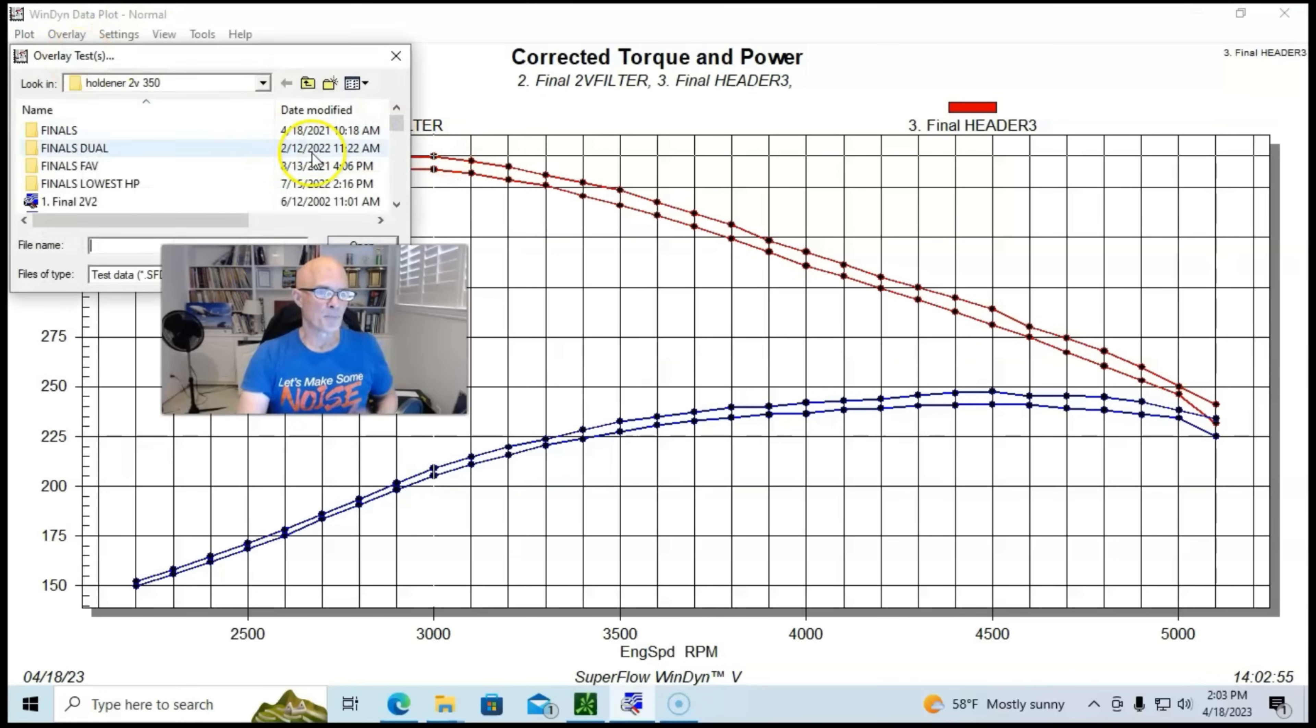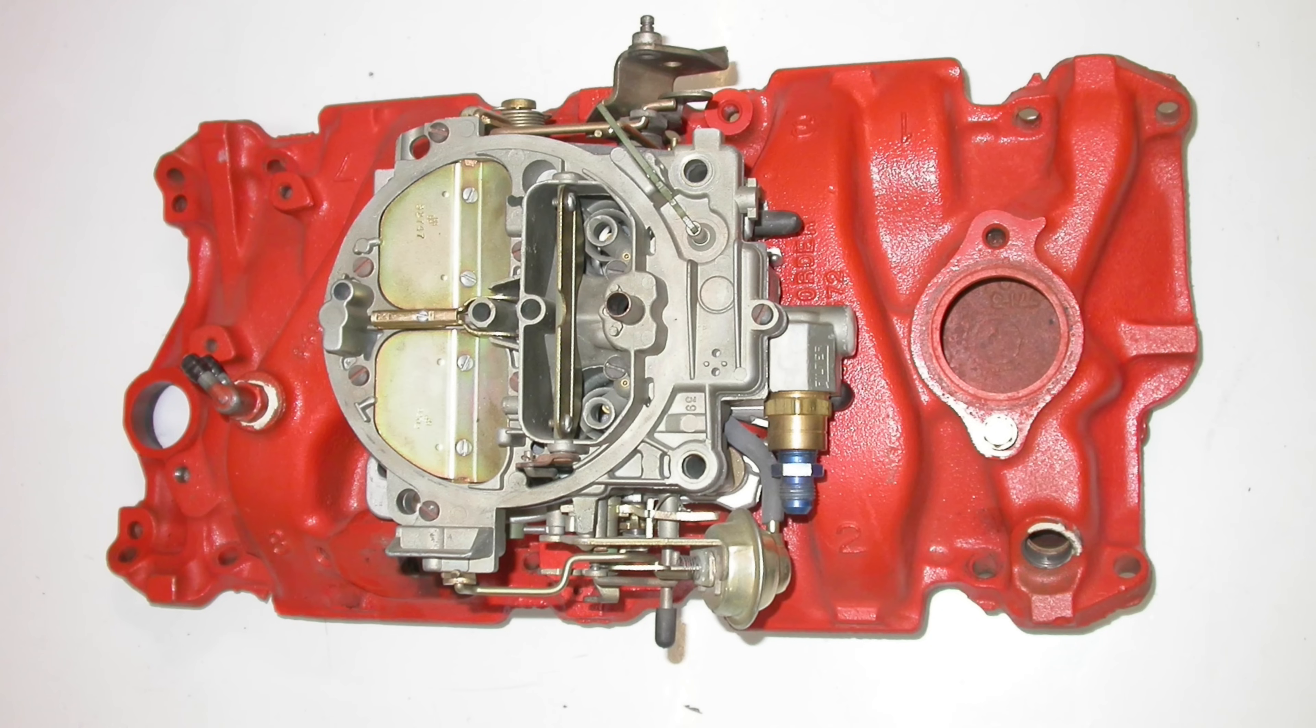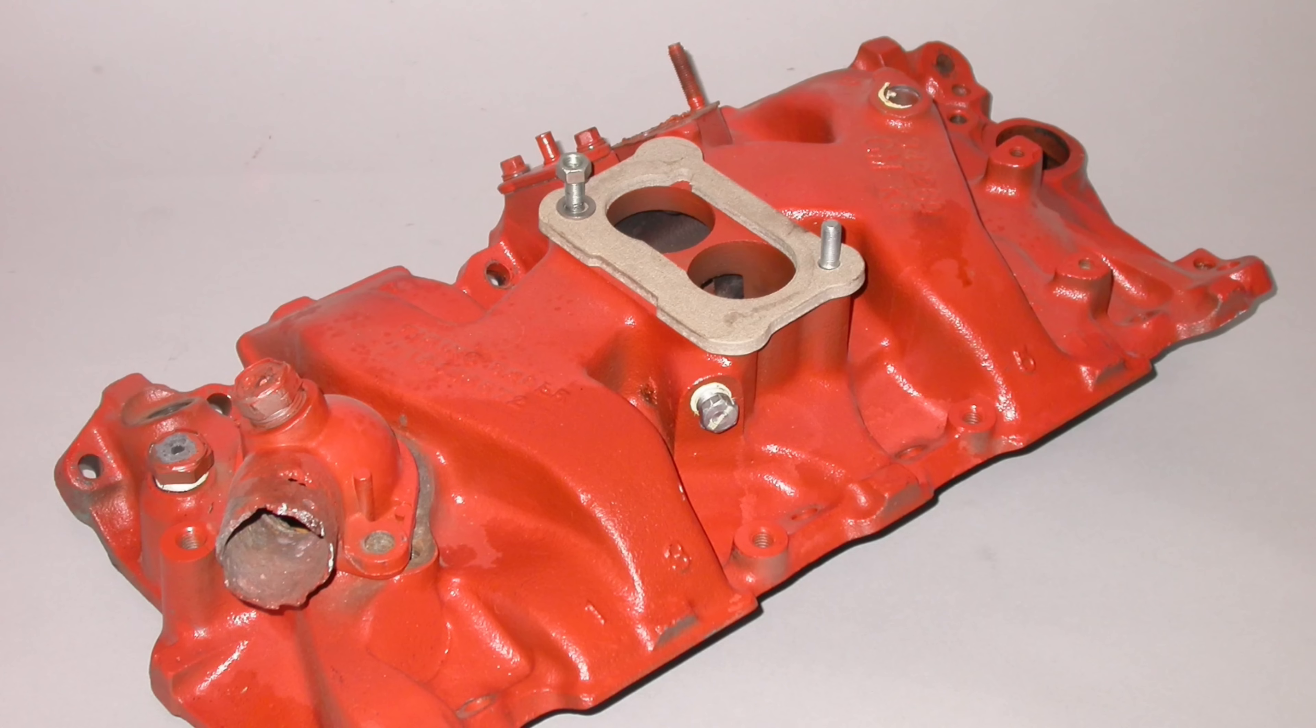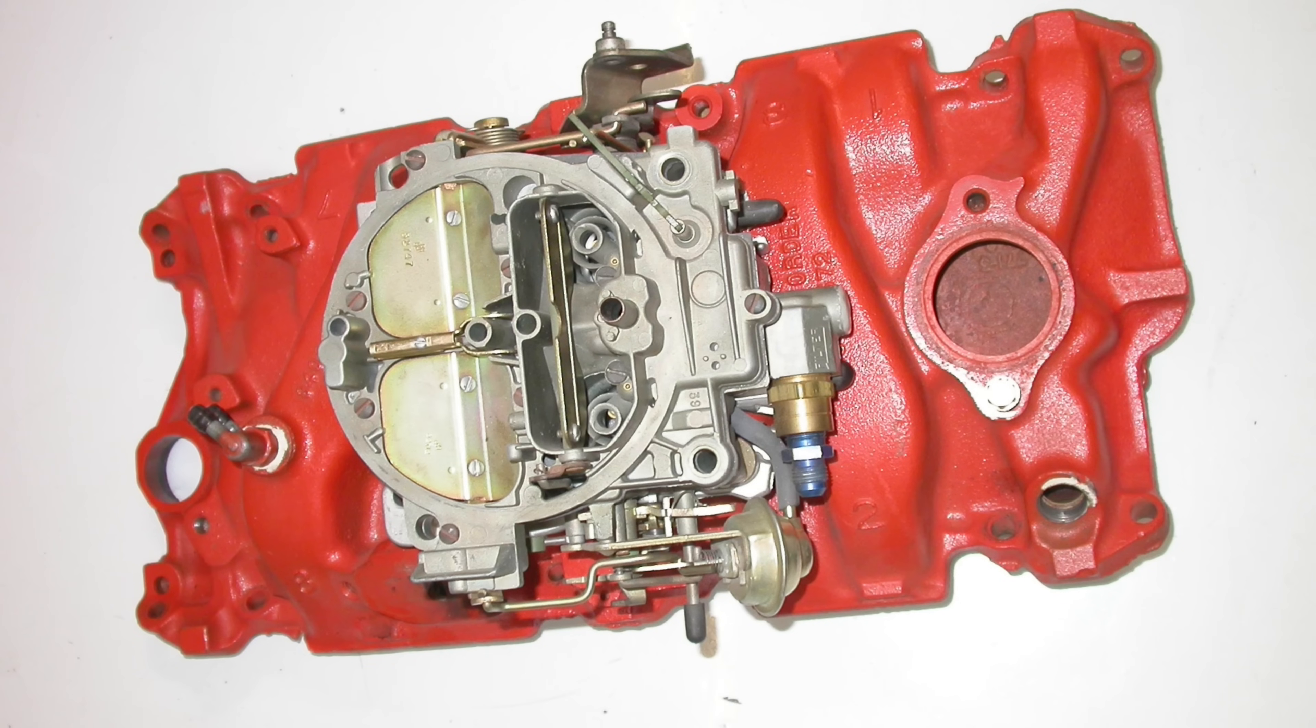So the next upgrade, pretty normal for a guy that has a two-barrel small block, is to put a four-barrel on it. In fact, if you were going to get one of these from the wrecking yard or somewhere, you probably would get a 350 that already has a four-barrel on it.